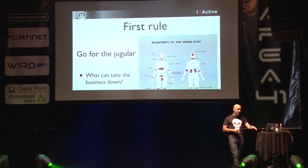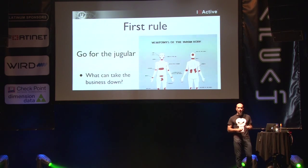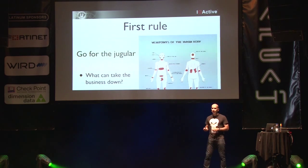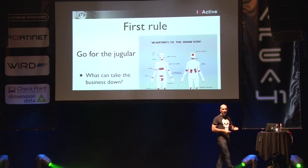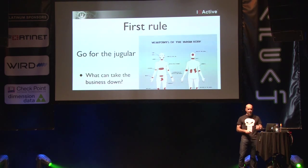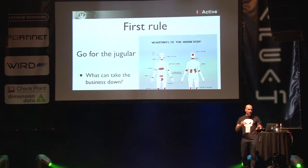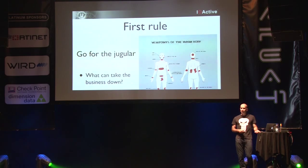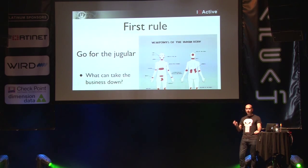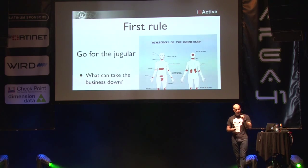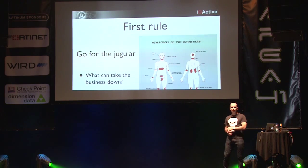It's really about going for what matters. After a proper threat model you'll have a good understanding of the core business assets — that Windows box containing credit card numbers, the secret sauce the organization runs on. If someone loses, deletes, or sells that data, you're out of a job and probably in jail. Focus on going for the jugular: one hit that if it connects will punch you down and you're done.